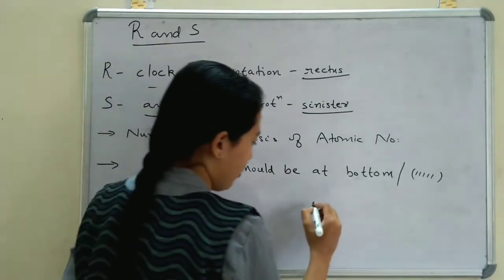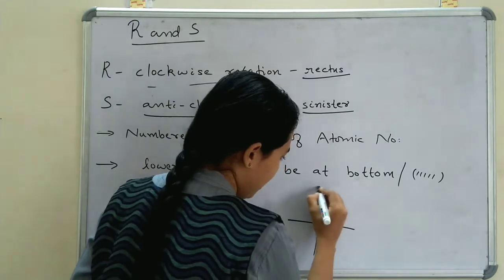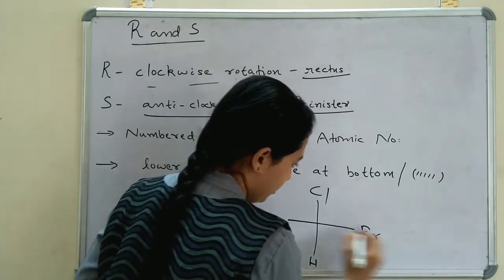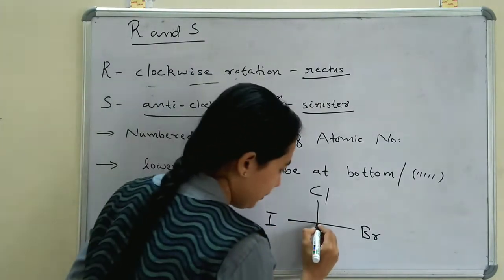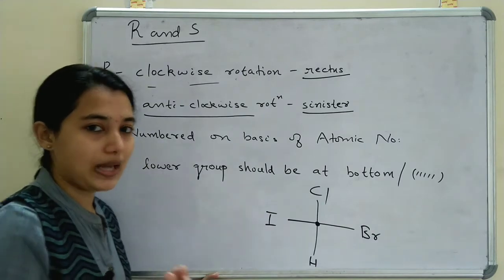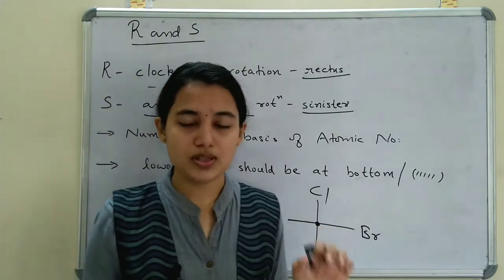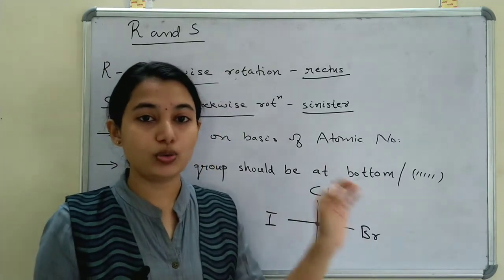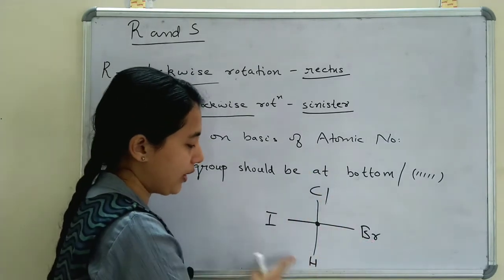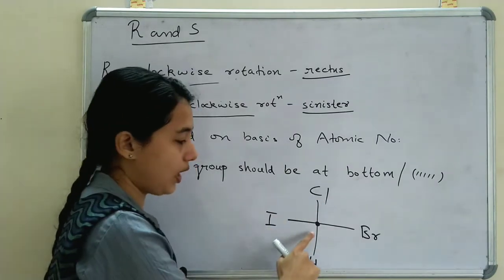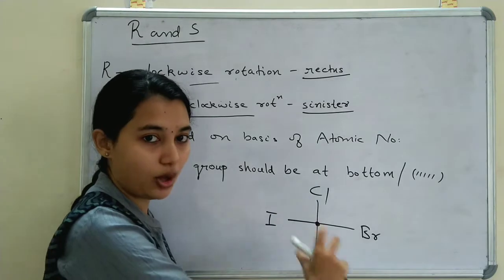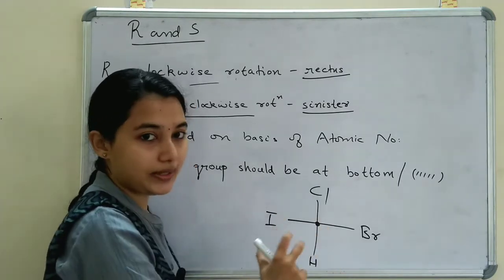Let's take a carbon with four substituents: chlorine, hydrogen, bromine, and iodine. This carbon is the chiral carbon. A chiral carbon is one that has four different substituents — bromine, hydrogen, iodine, and chlorine — and we have to assign R and S nomenclature for this chiral compound.